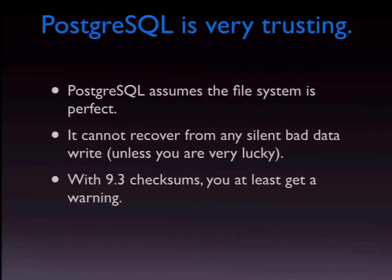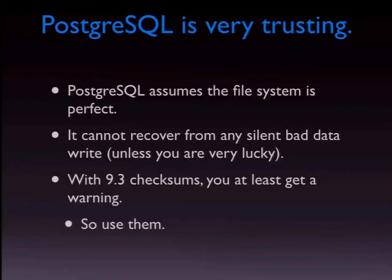If you are using 9.3 and later — which you should be — and if you're using checksums — which you should be — you at least get a warning that the data that came back is not the data that was expected. So use them, turn them on. It's a shame that they are not on by default currently, and I don't believe they're on by default in 10 either. Once you've created a cluster without checksums, you're stuck — you have to recreate the database with pg_dump and restore, or something like that.